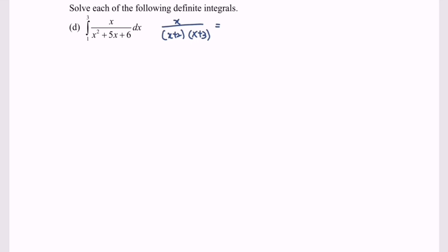Rewrite the situation and express the function into a partial fraction: A over (x plus 2) plus B over (x plus 3), since the denominator is a linear factor and the numerator will be a constant, which is A and also B.